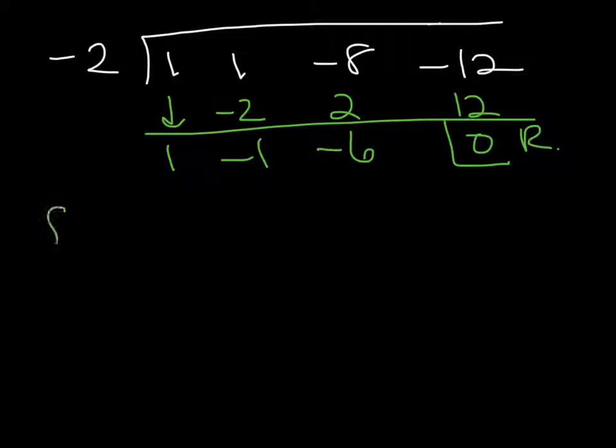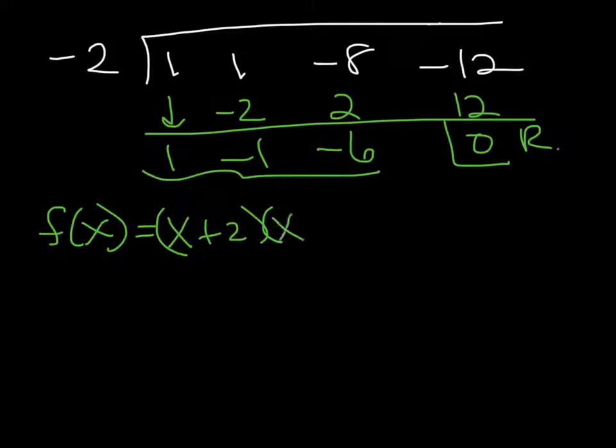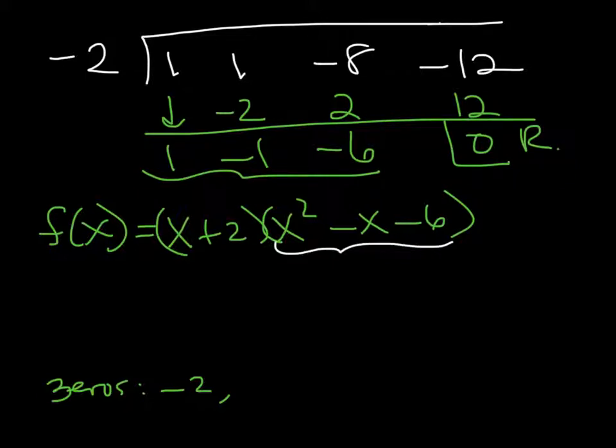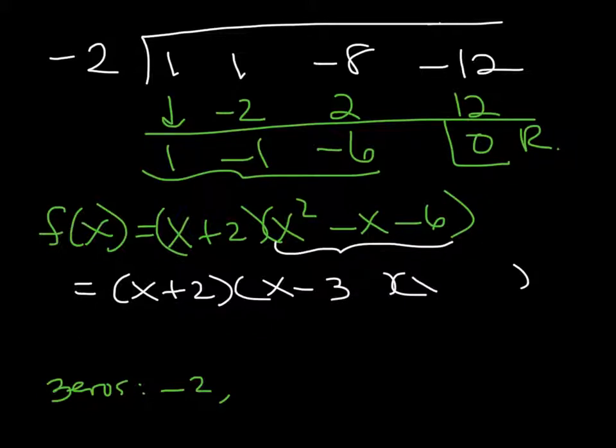So I know that so far my function looks like this. Negative 2 is 0, which means x plus 2 is a root. And what I have left here is, here's my coefficients, so that's a 1x squared minus x minus 6. All right, so again, we already know that one possible 0 is at, so we have 0s at negative 2, and we're looking for the other 2. So I turn my focus to right here, and I try to either factor or use quadratic formula to find my remaining 0s. So if you keep factoring, I think that one factors into x minus 3, x plus 2.